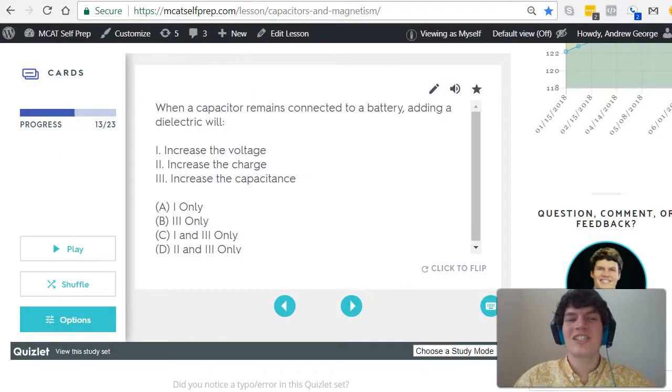Let's take a second look at our question stem. When a capacitor remains connected to a battery, adding a dielectric will—it's not going to change the voltage. The voltage is constant and depends on the voltage in the battery. What about the charge? Well, as we saw, more charge began to build up. So two is definitely correct.